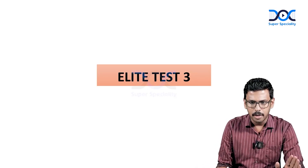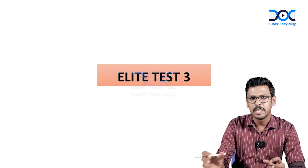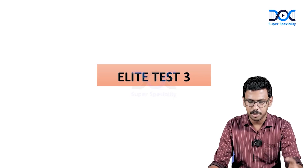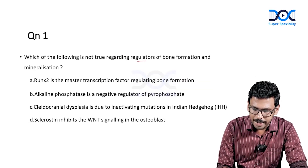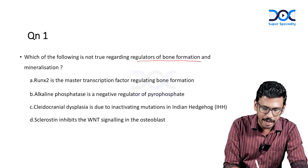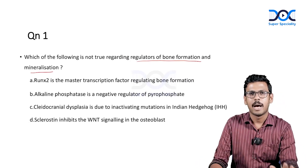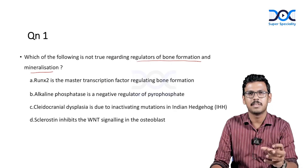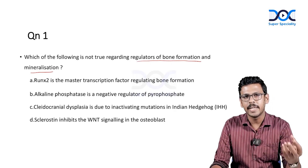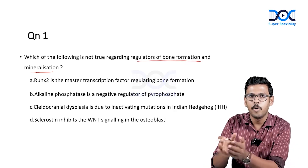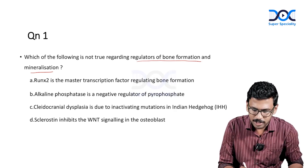Question one is a straight pick from Harrison, in the initial part of the bone mineral metabolism physiology. Which of the following is not true regarding the regulators of bone formation and mineralization? This is a very high yield area — you have to learn many confusing hormones and transcription factors and their respective effects on various steps of bone formation and metabolism.